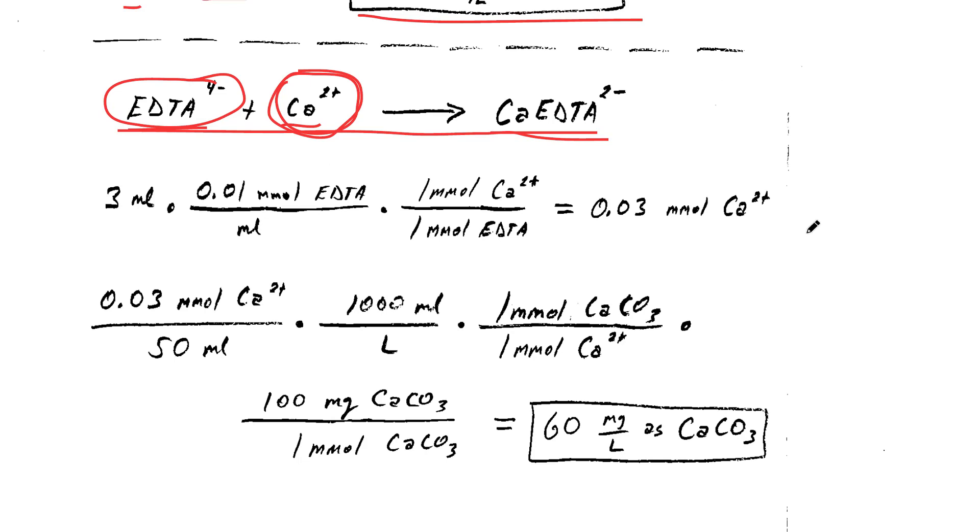So to do the calculations and get us to the units that we want, we take our 3 milliliters that was added, multiply times the concentration of EDTA.